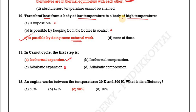In a Carnot cycle there are 4 steps: isothermal expansion, adiabatic expansion, isothermal compression, and adiabatic compression. For the first process step, isothermal expansion is the answer.